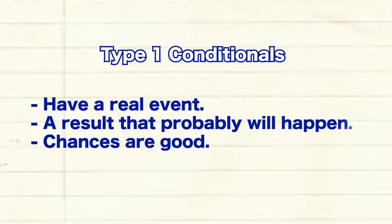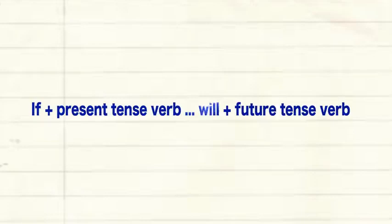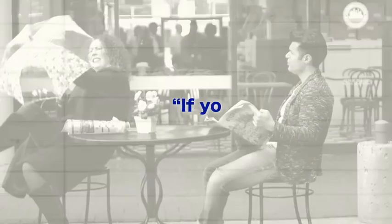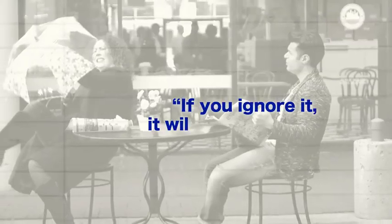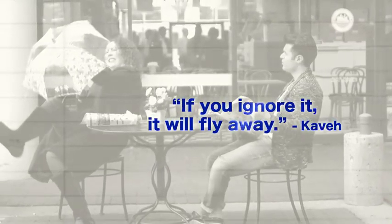Here is the pattern: 'if' plus present tense verb, 'will' plus future tense verb. Kave uses this when he says, 'If you ignore it, it will fly away.'